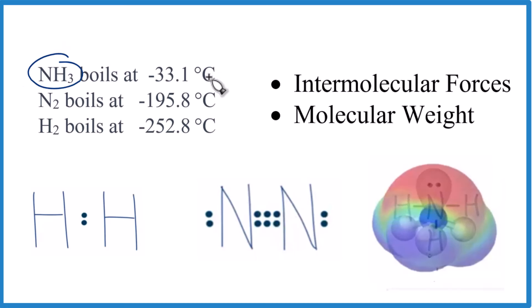So ammonia is going to have the highest boiling point: -33.1°C. That's a lot warmer than -195.8°C.